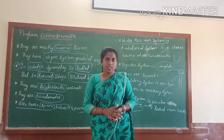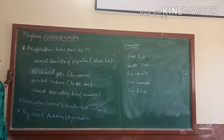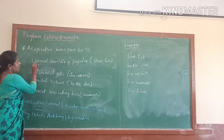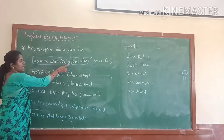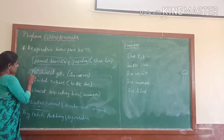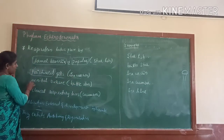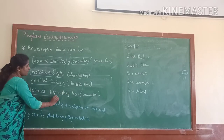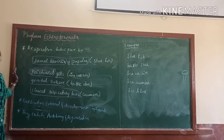Respiratory characteristics: respiration takes place by different types of organs. In starfish, they have dermal branchia or papillae, which are the respiratory organs. In sea urchin, they have peristomal gills. In brittle star, they have genital branchia. In sea cucumber, they have cloacal respiratory trees. These are the main respiratory organs present in different species.